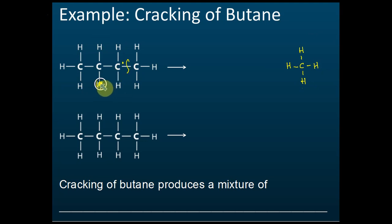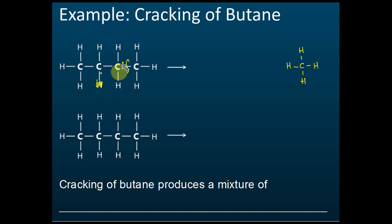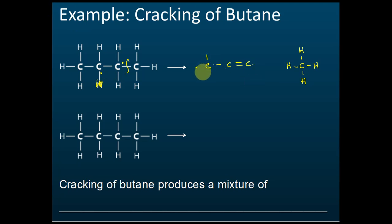After the hydrogen is taken away by the free radical, this carbon also has one electron left. That electron and the other electron on the adjacent carbon combine together, so this carbon shares an additional pair of electrons with the neighboring carbon. This forms a double bond, producing an alkene.